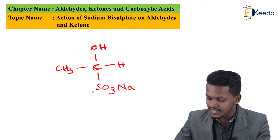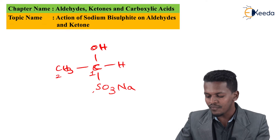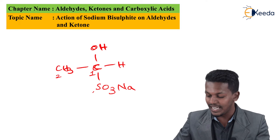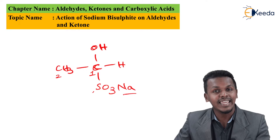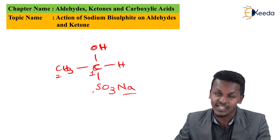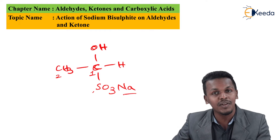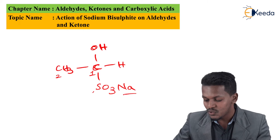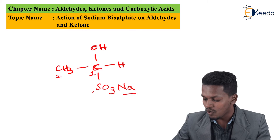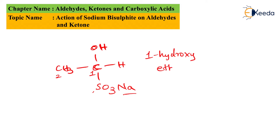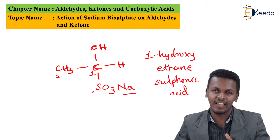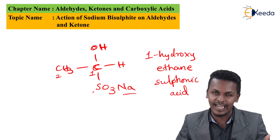Considering the carbon numbering — carbon 1 is the central carbon and carbon 2 is the methyl carbon — the total number of carbon atoms is two, so the base name is ethane. The product is the sodium salt of ethane sulfonic acid with an OH group attached, so it can be called 1-hydroxyethane sulfonic acid (sodium salt). Since sodium is attached, the product is soluble in water and is crystalline in nature.